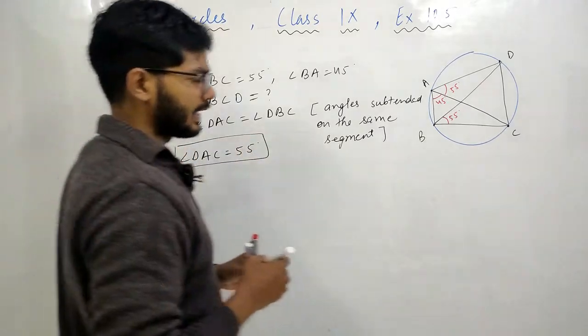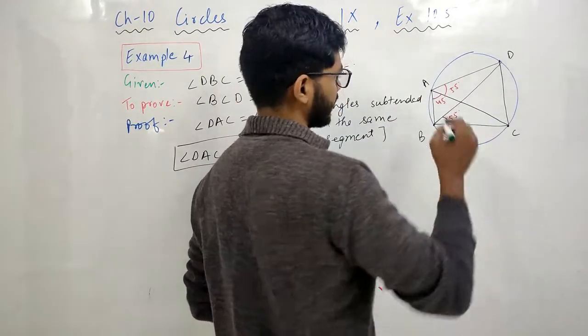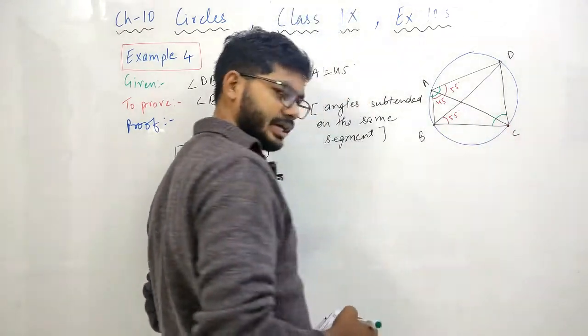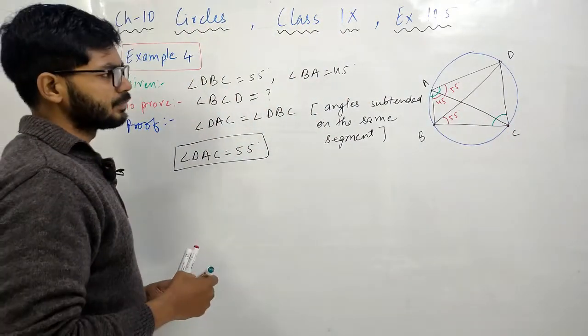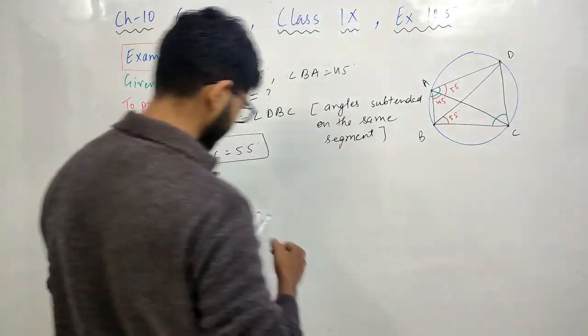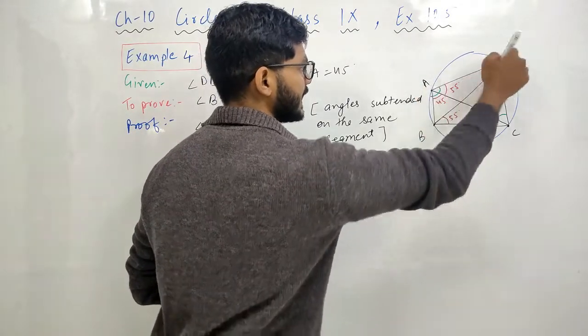अब हमें ये पता है कि भाई, क्योंकि ABCD एक cyclic quadrilateral है तो इसके pair of opposite angles का sum कितने degree का होता है? 180 degree. तो अगर मैं इन दोनों का sum निकालूंगा तो कितना आएगा? 180 degree. लेकिन पहले हम ये देखते हैं कि हमारे पास complete angle नहीं है which is BAD.